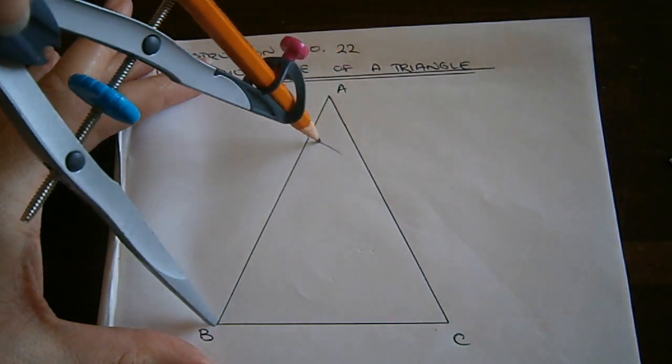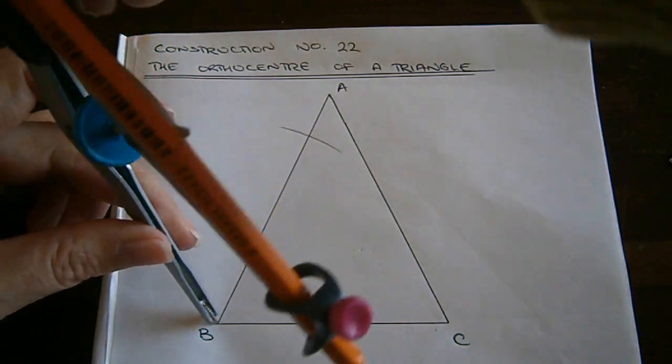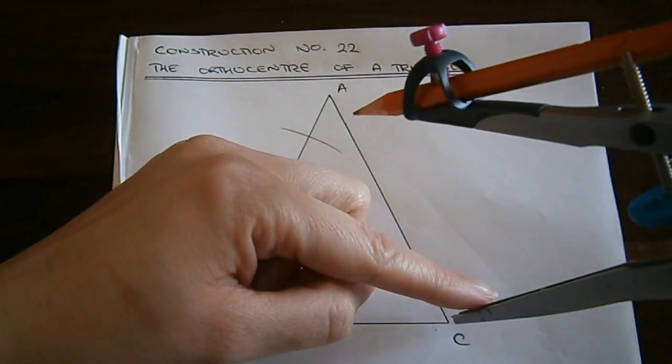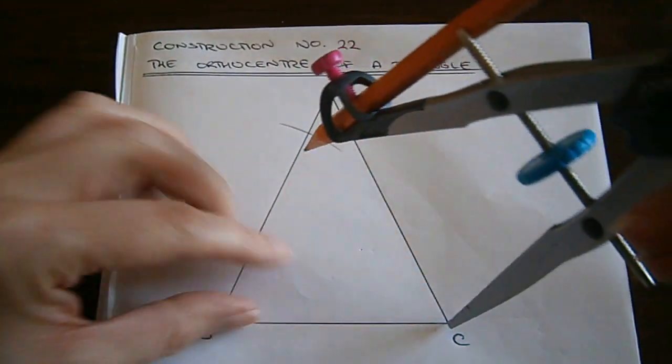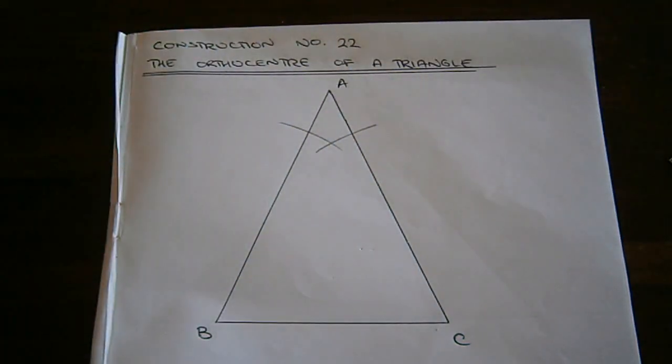From here I draw an arc with the compass point on B through AB. I change my compass point so that it's on C, keeping the compass at the same width and I draw an arc through AC.